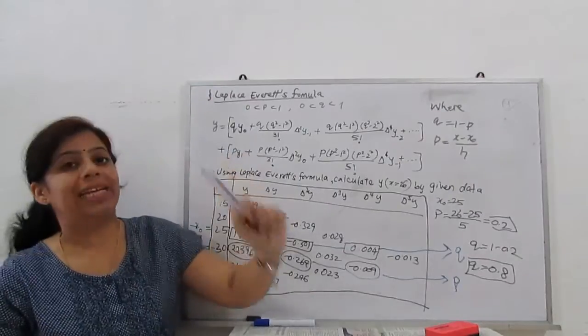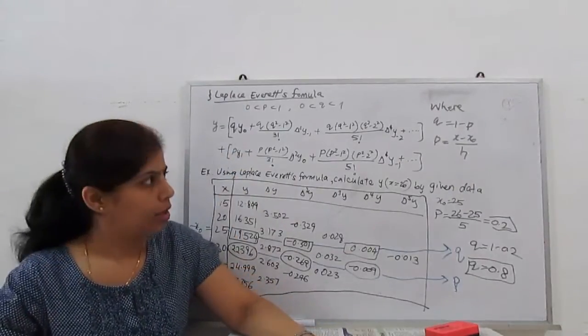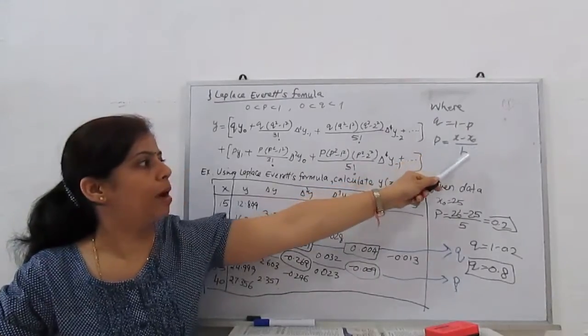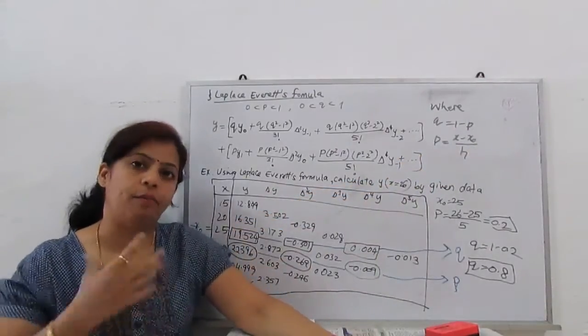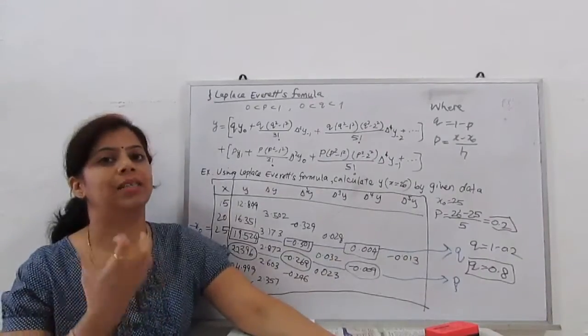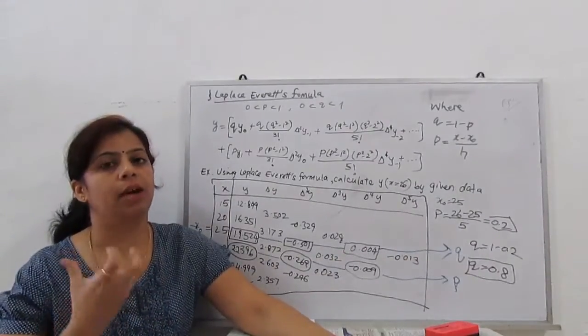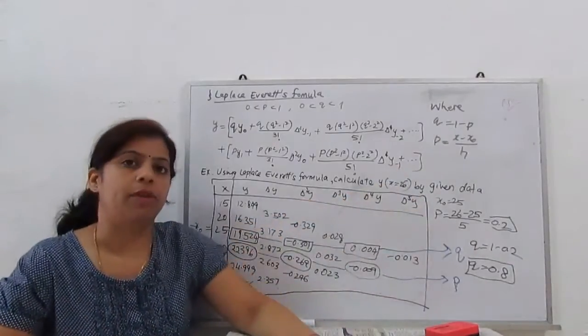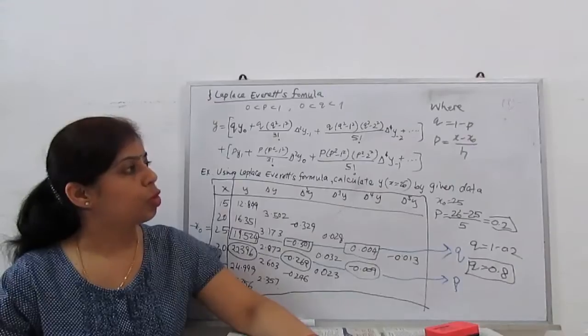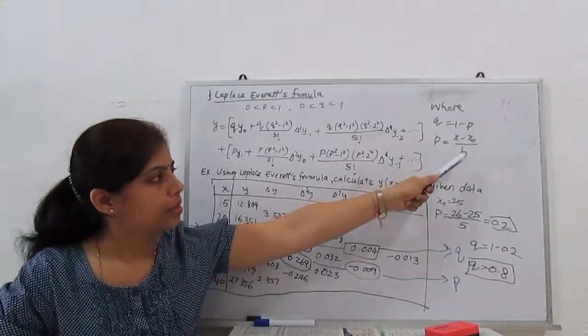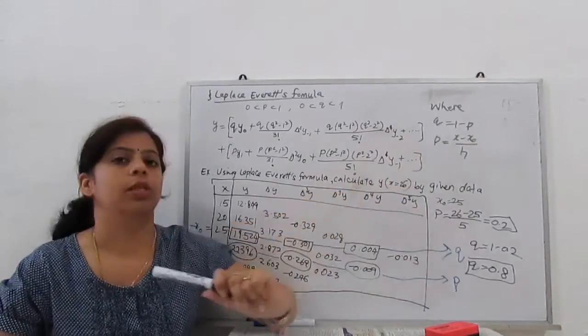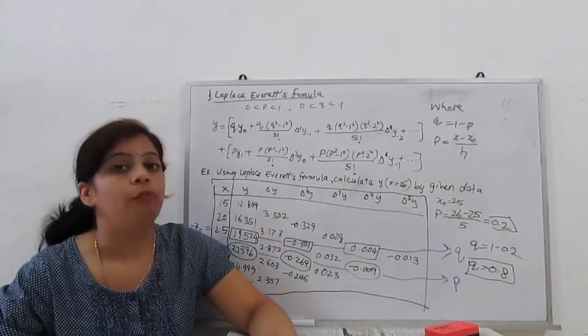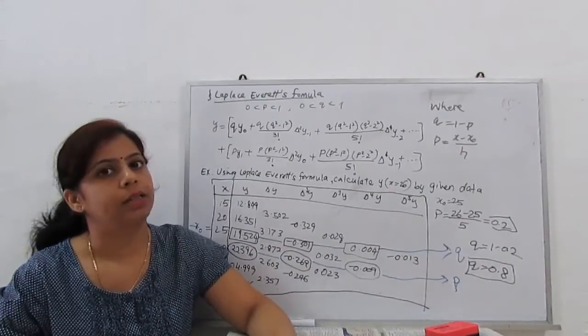It's given in two terms. P we already know - our P is X minus X0 by H. H is the difference. X is the point we have to find out, X0 is the initial point which we have to consider regarding X. So P is X minus X0 by H, and Q, there is another variable Q equal to 1 minus P.